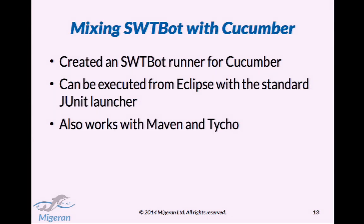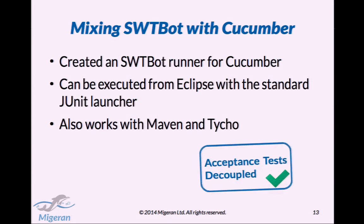Now we have two tools — SWTBot and Cucumber — and we are using them together. In order to do that, we had to create an SWTBot runner for Cucumber, so that we can use the SWTBot system from Cucumber itself. We plan to upstream that to Cucumber so it will become a Cucumber module. And of course, it can be executed from Eclipse with the standard JUnit runner, and it also works with Maven and Tycho. So it's really nice to use. With these tools, we have basically decoupled our acceptance tests.